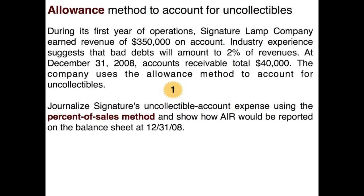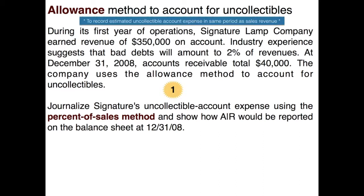The reason allowance methods are approved by GAAP is because they allow you to record the estimated uncollectible account expense in the same period as you recorded the sales revenue — so it follows the matching principle.